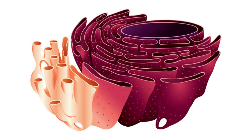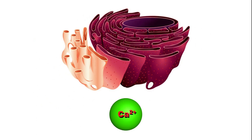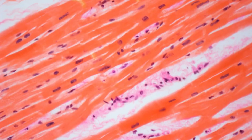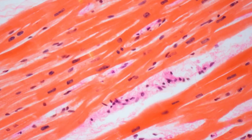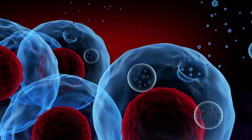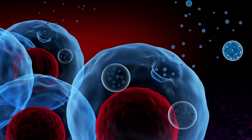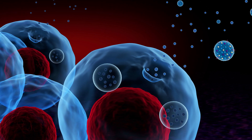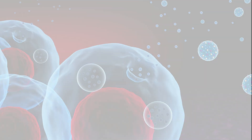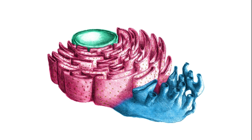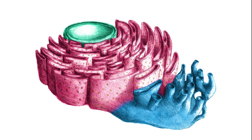The endoplasmic reticulum also acts as a storage site for calcium ions, which are crucial for many cellular processes, including muscle contraction and signaling pathways. Furthermore, it participates in the formation of vesicles, tiny membranous sacs that transport various molecules within the cell.